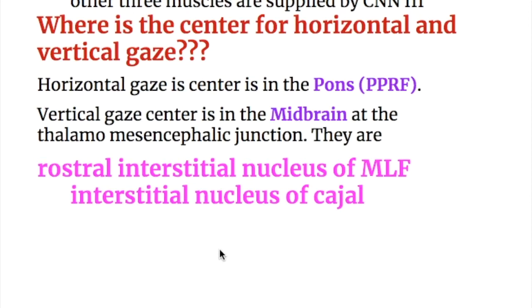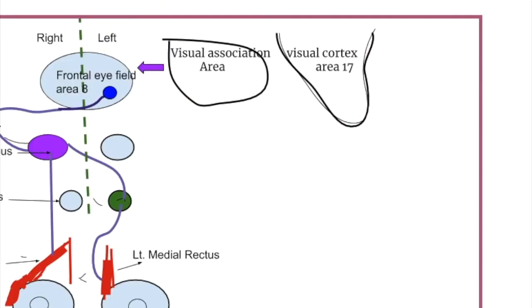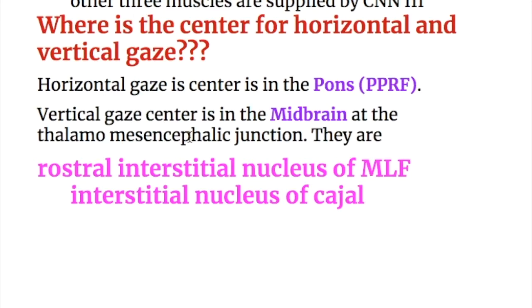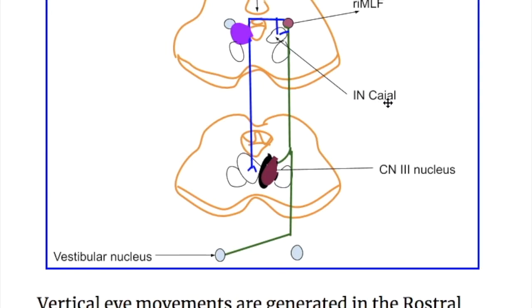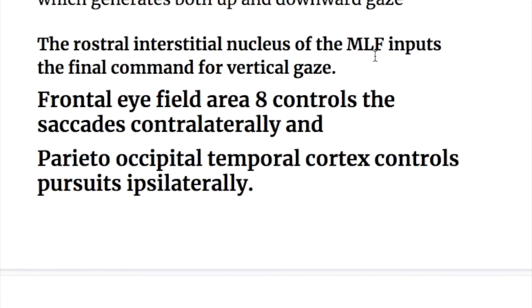Where is the center for horizontal and vertical gaze? The horizontal gaze center is in the pons and the vertical gaze center is in the midbrain at the thalamomesencephalic junction. They are the rostral interstitial nucleus of medial longitudinal fasciculus (riMLF) and interstitial nucleus of Cajal, connected to each other, to the contralateral side, and to the oculomotor nucleus. The vertical eye movements are generated in the riMLF, a paired structure which generates both up and downward gaze, and inputs the final command for vertical gaze.